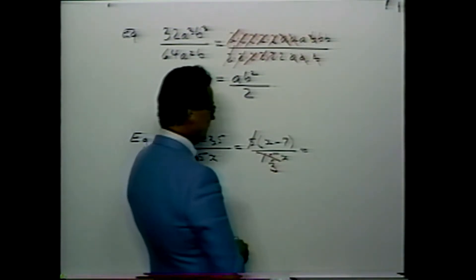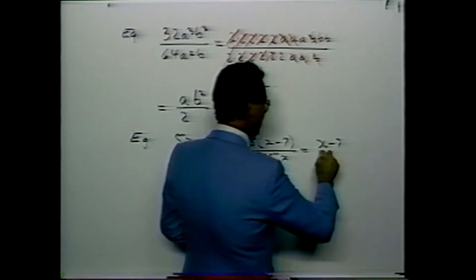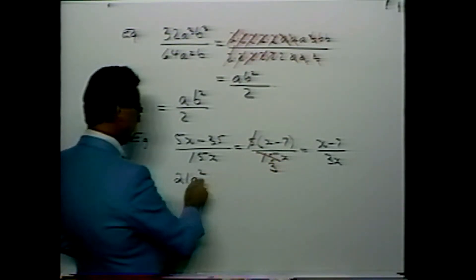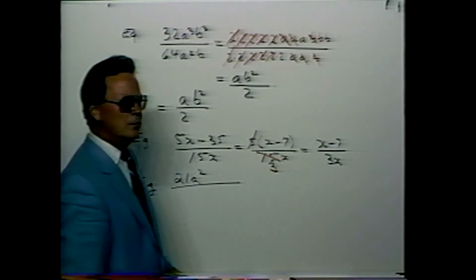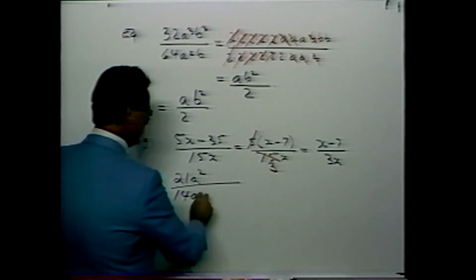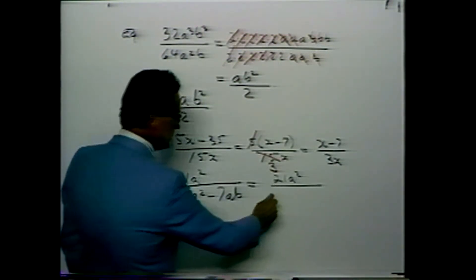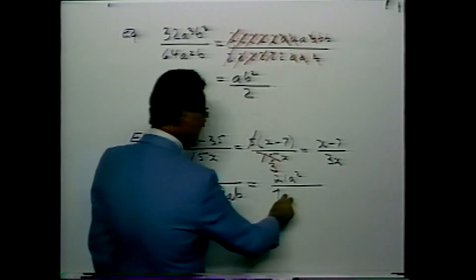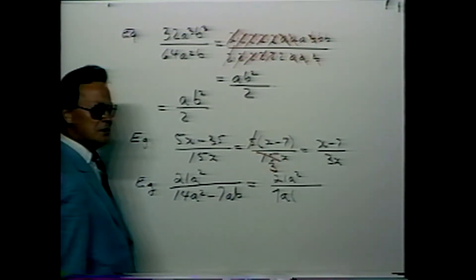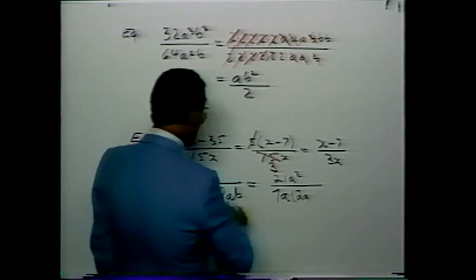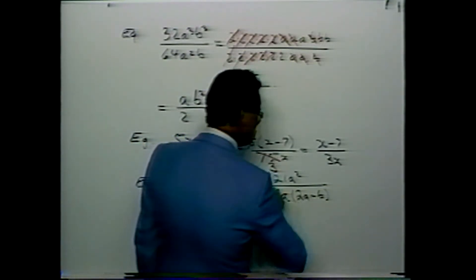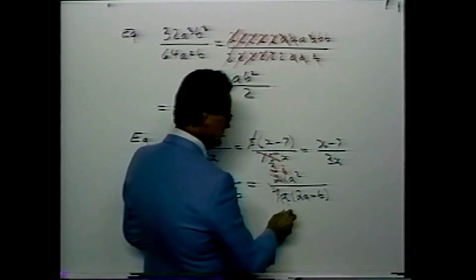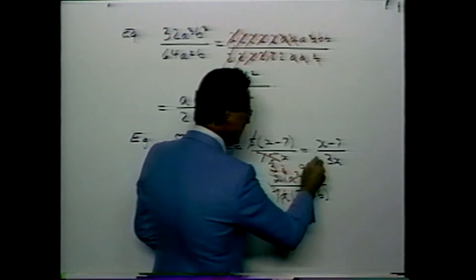Here is another example: 5x minus 35 divided by 15x. Let's take out the common factor and write 5 times x minus 7, over 15x. Take 5 into 15, reducing it to 3, and we end up with x minus 7 over 3x.